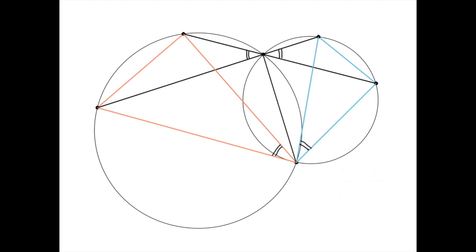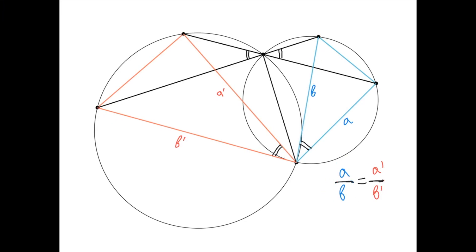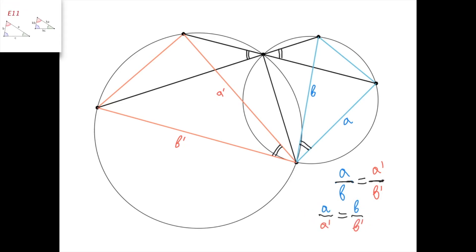Here's another way to prove the second similarity. We know that the blue triangle is similar to the red triangle, and therefore the ratio of its corresponding sides is equal. So a divided by b equals a prime divided by b prime, which can also be written as a divided by a prime equals b divided by b prime. Now if we take a look at the other pair of triangles, a divided by a prime is the ratio of the two sides of the first triangle, and b divided by b prime is the ratio of the two sides of the other triangle. We also know that the angle between those sides in the two triangles is equal, because this angle obviously equals this angle when we consider that this equals this. Therefore, these two triangles are also similar.